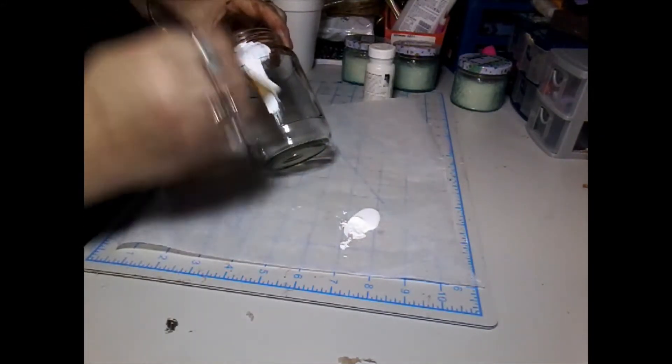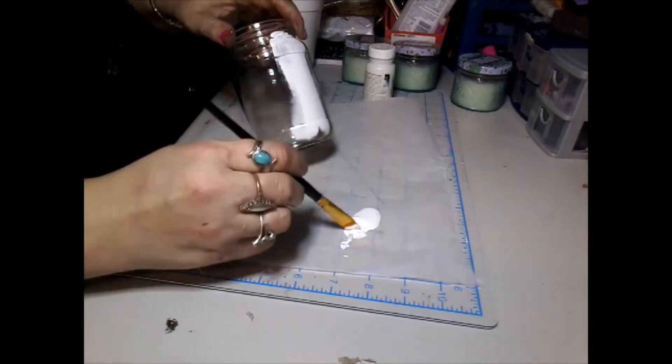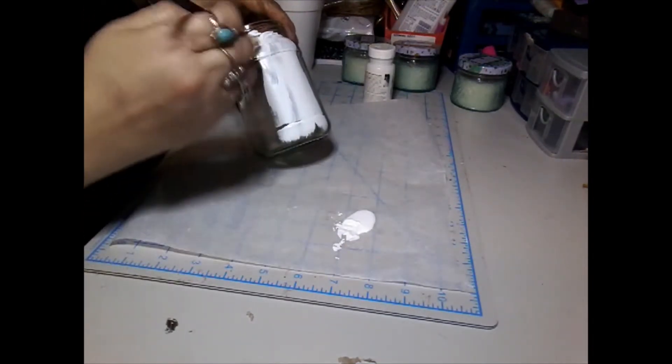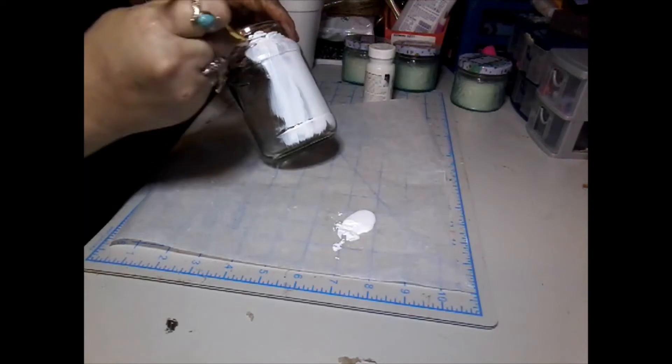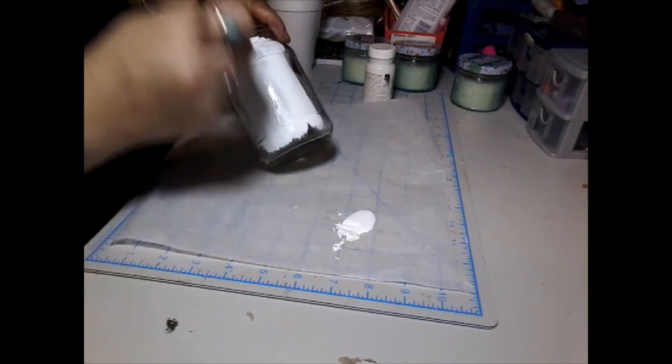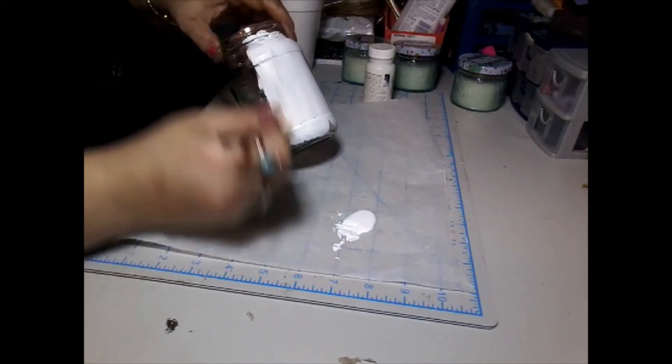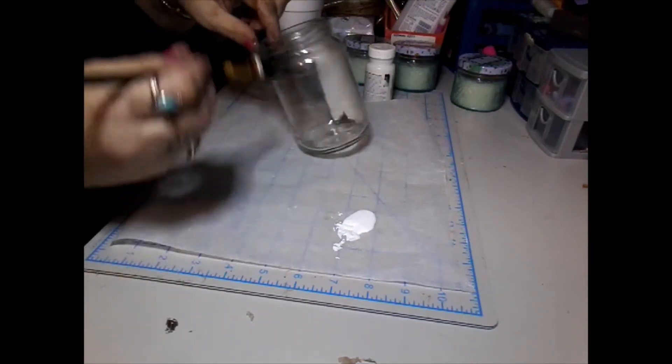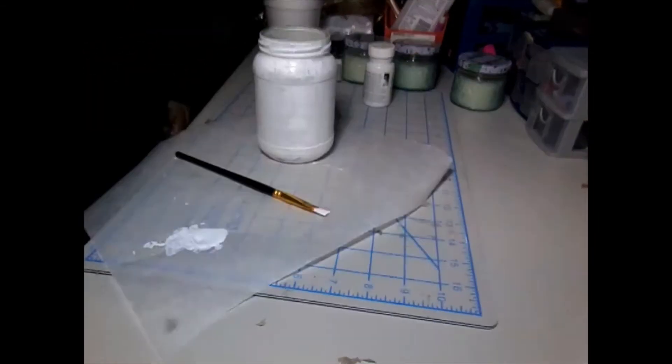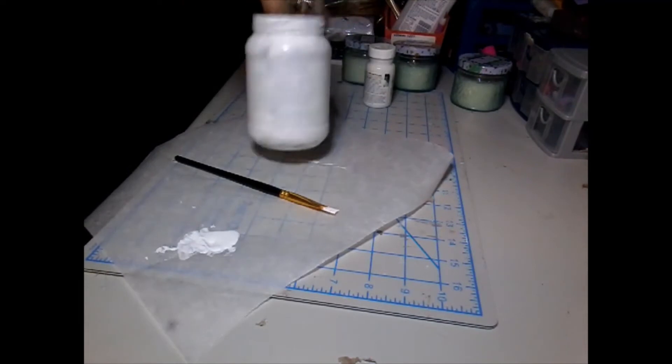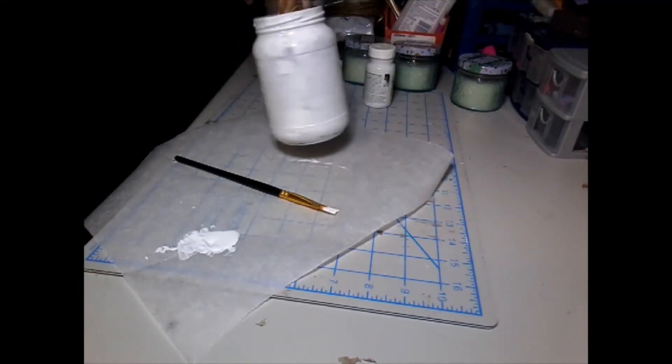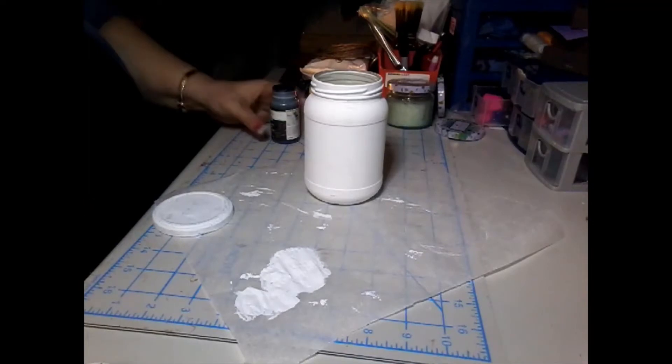It'll take two coats. I'll show you what it looks like after one and before I start the second coat. We're just going to start painting it all the way around and getting the top as well. That's after one coat. I'm going to go ahead and do another coat.